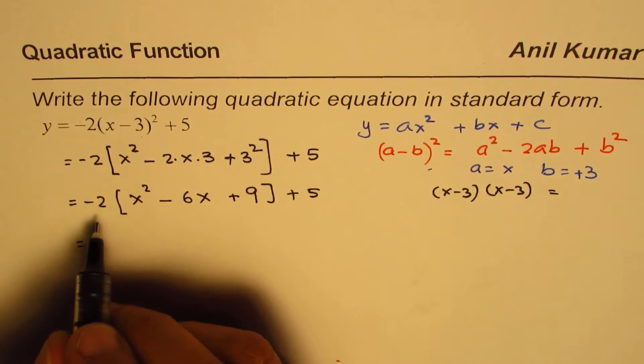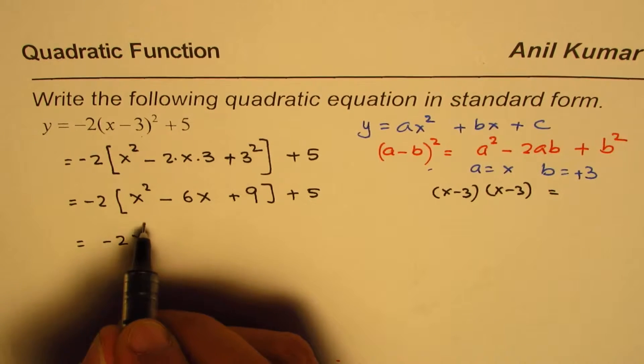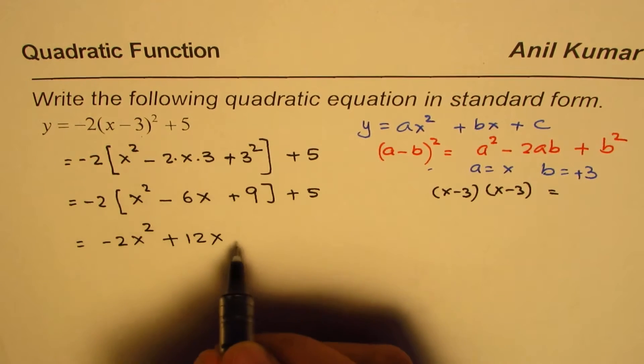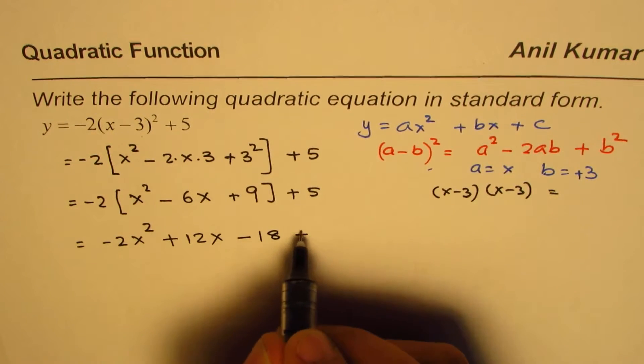Now you should open the bracket applying the distributive property. Minus 2x square is the first term. Minus and minus makes it plus 12x. Minus and plus is minus 18 plus 5.